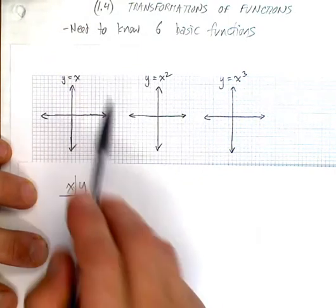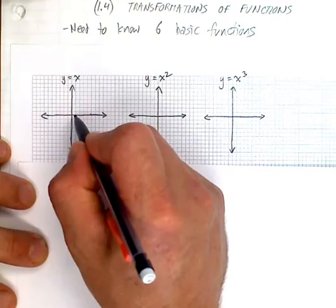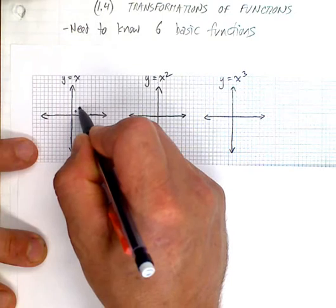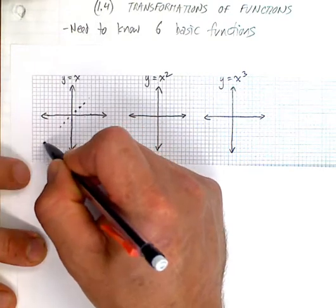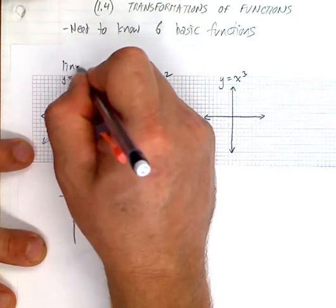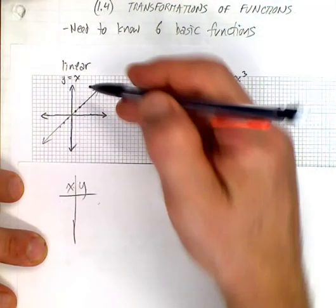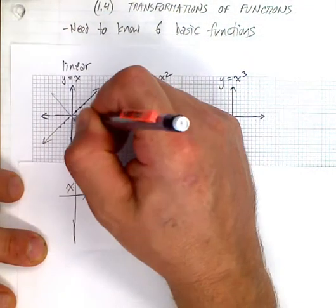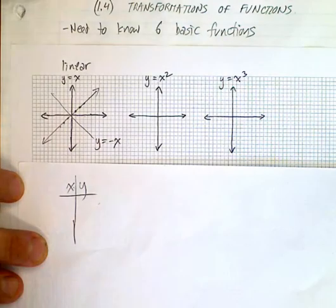With a linear function, no matter what x I pick, I will always have the same y. When x is 1, y is 1; when x is 2, y is 2; when x is 3, y is 3, and we end up with a linear function. If you look at a negative x, this line here would be y equals negative x. So linear functions, one of the first basic functions.